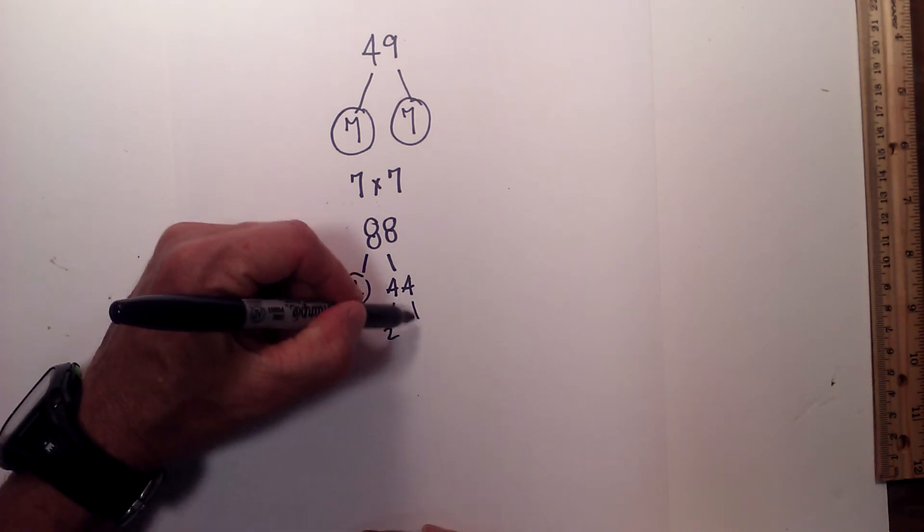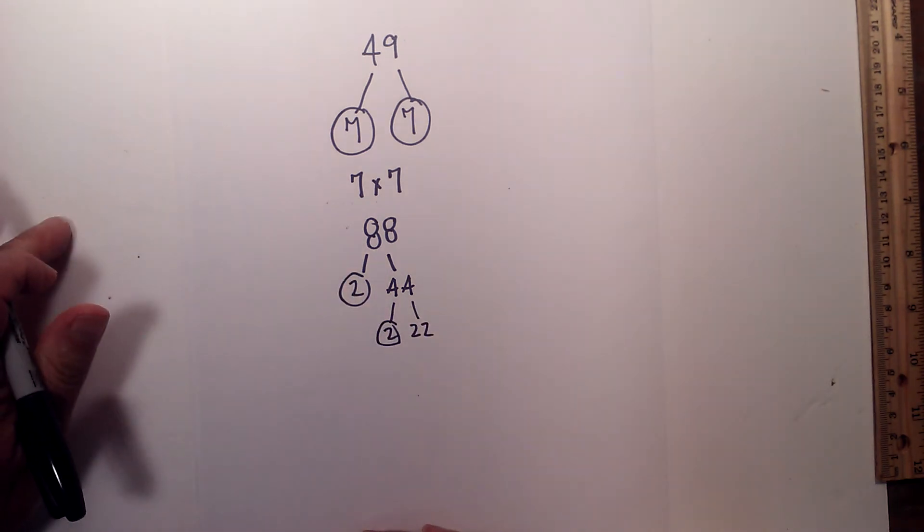Now 2 times 22 equals 44. Circle the 2 because it is prime.